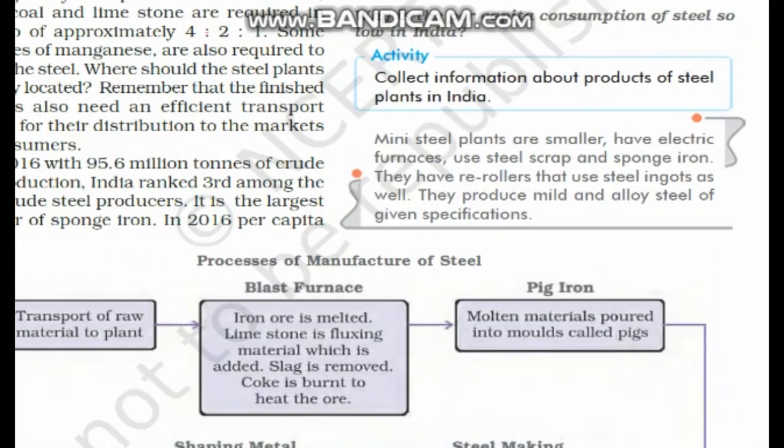Why is the per capita consumption of steel so low in India? The reasons are: high cost and limited availability of coking coal — this is also why we are a leading exporter of sponge iron rather than finished steel — low productivity of labor, disrupted supply of electricity, and poor infrastructure. Just as with cotton, we export the raw material rather than the finished product, even though the final product has more value.